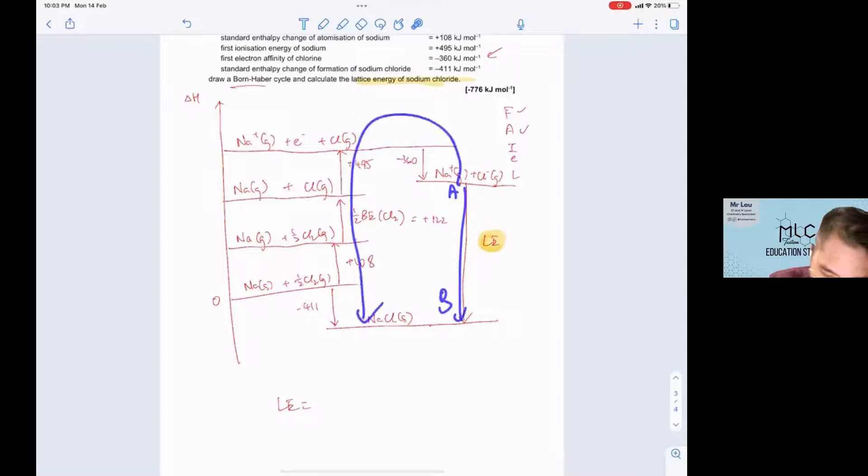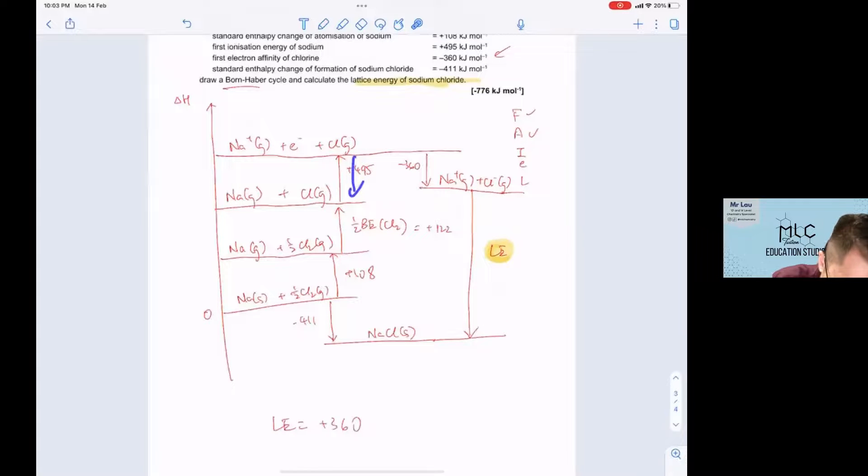So the first one you are going against the arrow so it will be plus 360, going against this arrow minus 495, going against this arrow minus 122, minus 108, and the last one is in the same direction so you just add it in minus 411.